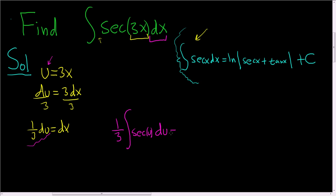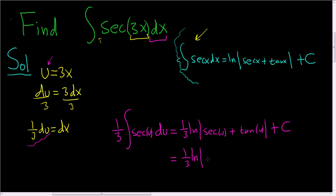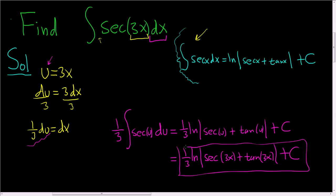Now we can invoke our formula. This gives us one-third times the natural log of the absolute value of secant of u plus tangent of u, plus C. To finish, simply replace u with 3x: the result is one-third times the natural log of the absolute value of secant of 3x plus tangent of 3x, plus C. That is the final answer.